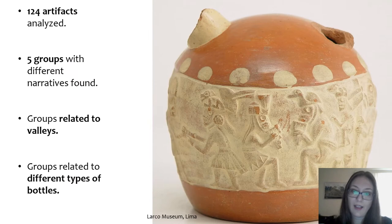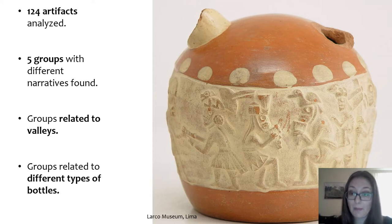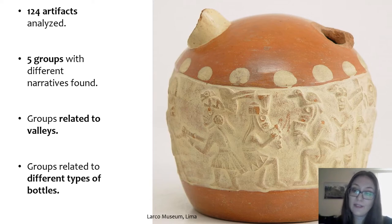I analyzed 124 bottles and artifacts with dances of the underworld, with skeletons dancing and playing pan pipes. Five different groups were found, and I classified them into five groups that I will show to you. These groups can be related to the valleys we have seen before.